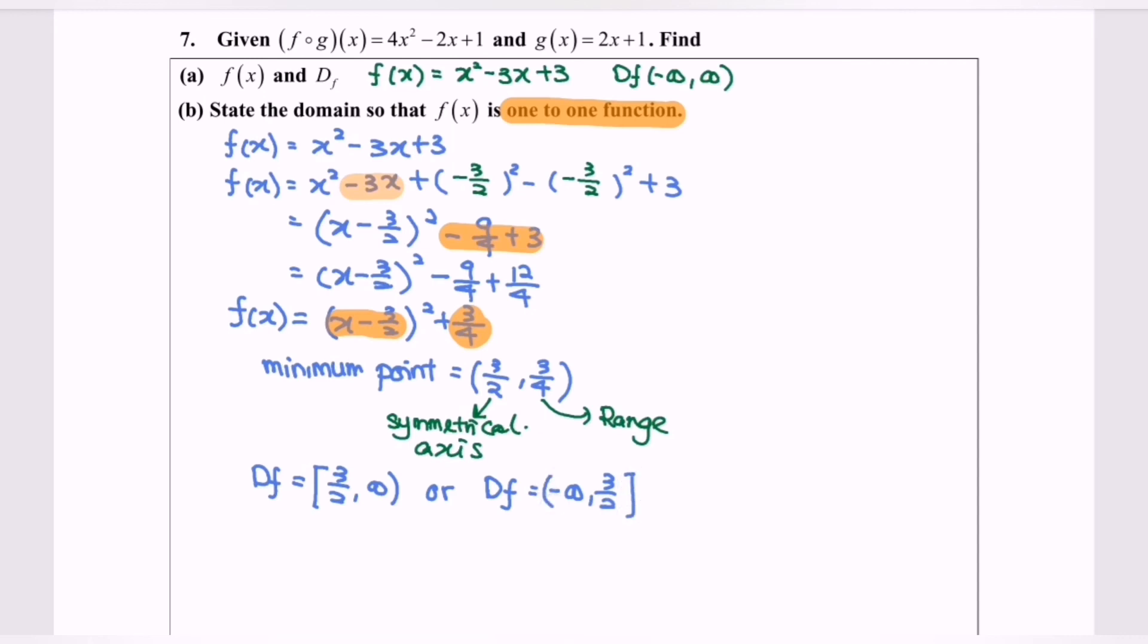Either one so that f(x) becomes one-to-one function. Regarding the range, it would be 3 over 4 until infinity.